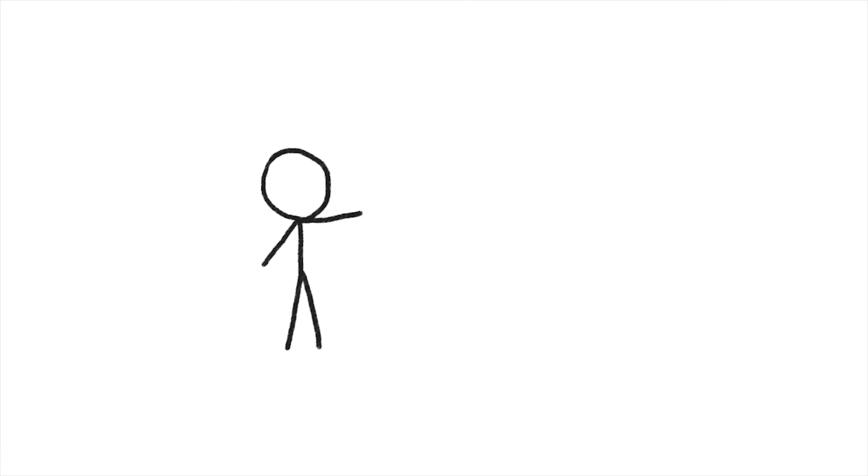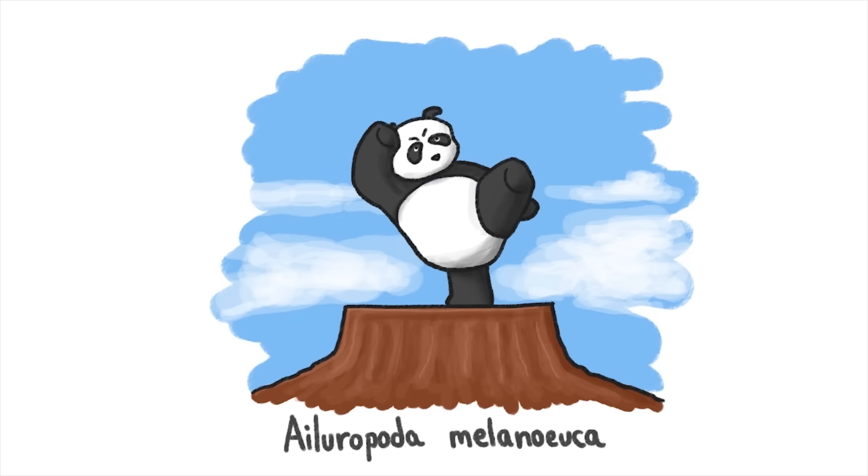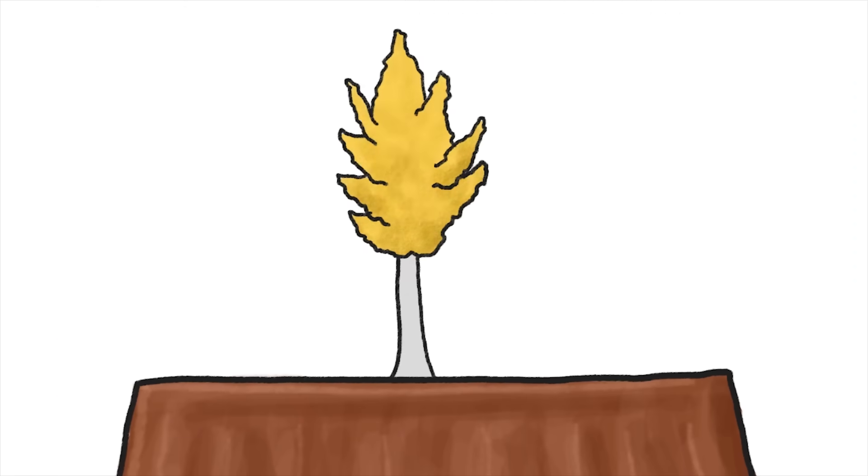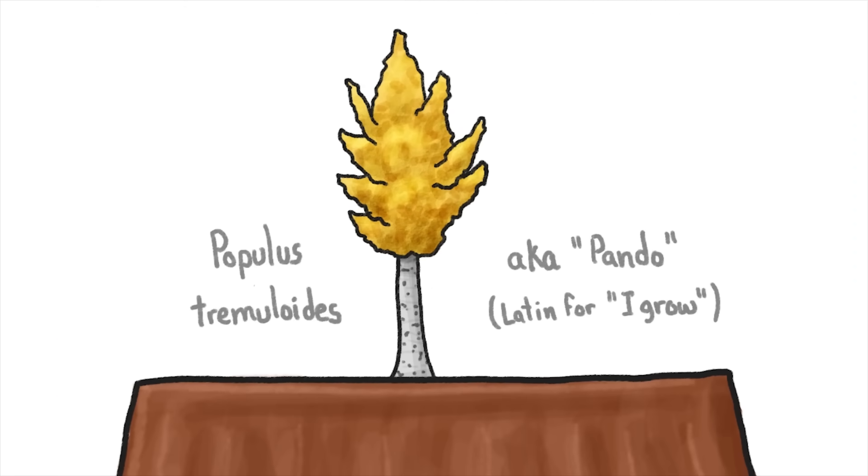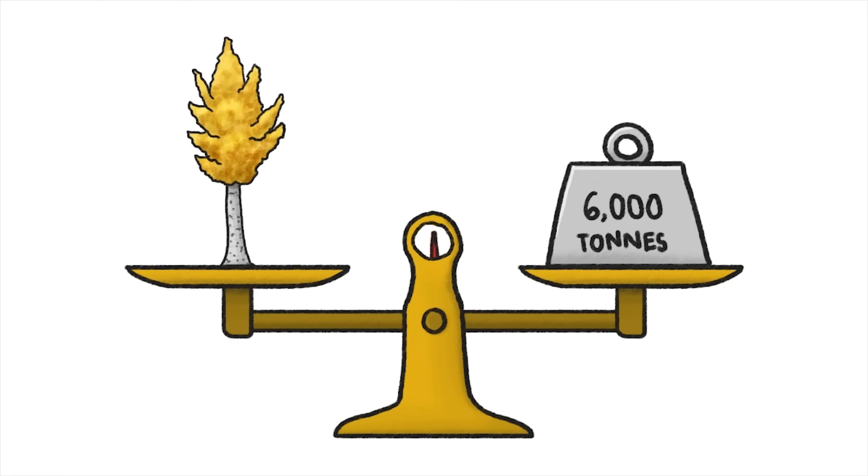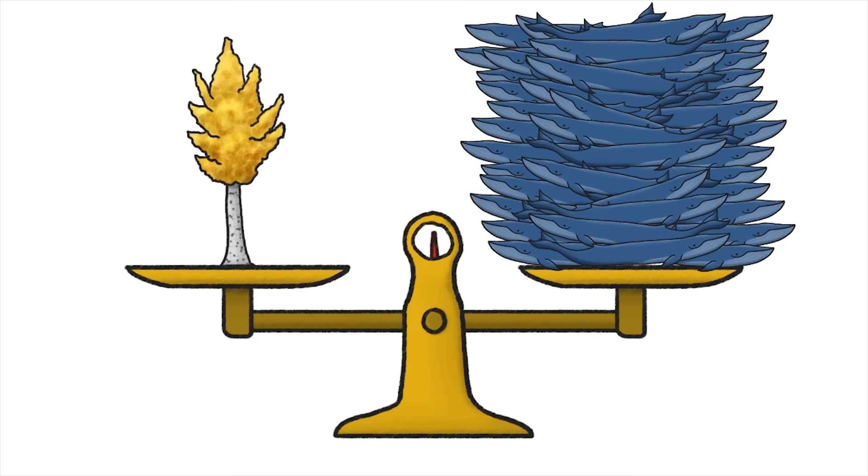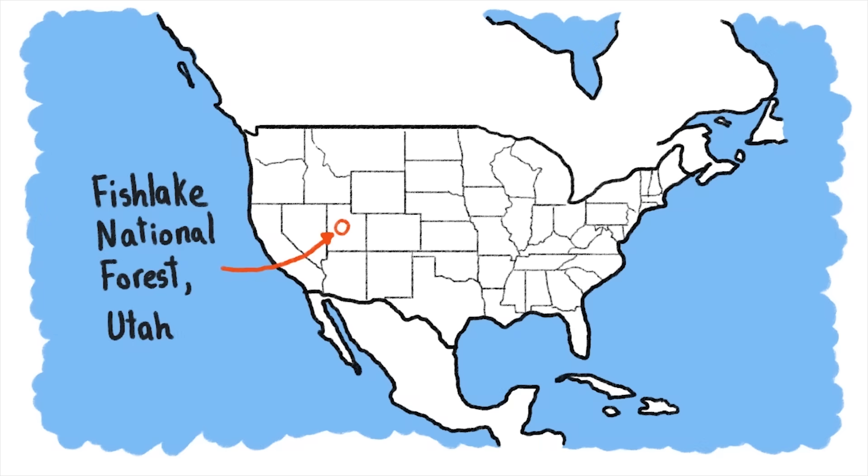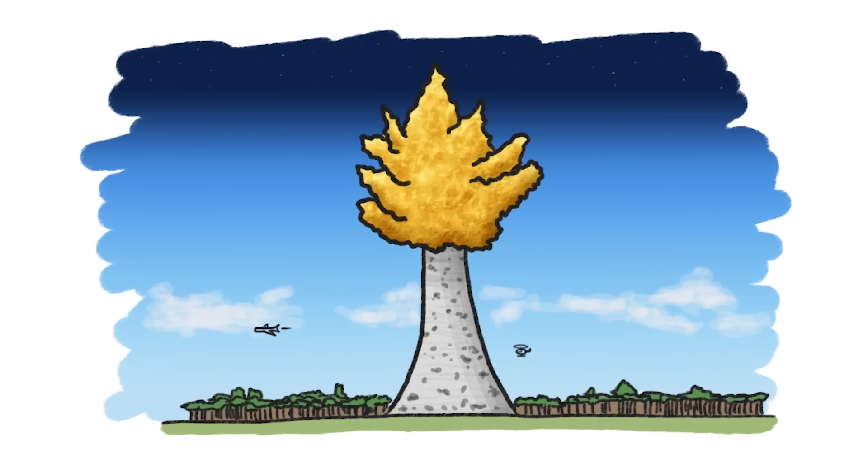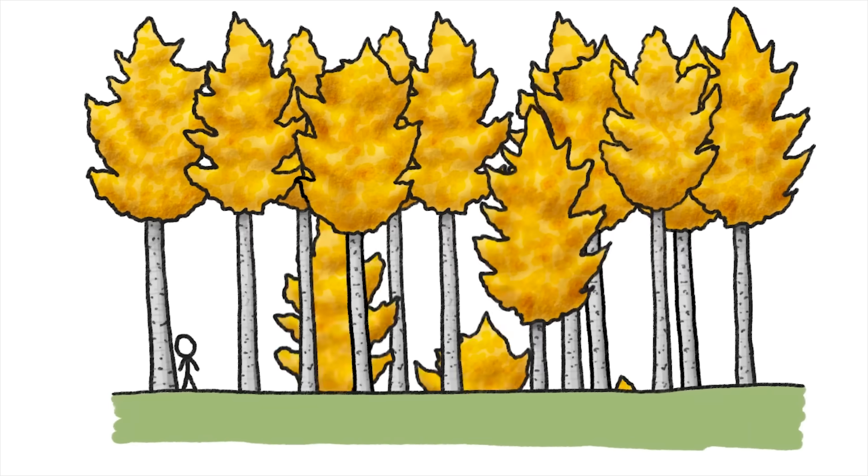However, if we're talking about the good old heaviest organism ever found, that prize goes to a giant panda living high on a Utah plateau. Just kidding. It goes to a single quaking aspen, named Pando, that weighs over 6,000 tons. As much as 40 blue whales. If you go to the Fish Lake National Forest, though, you won't see a giant tree trunk. You'll just see a forest of regular-sized trees.